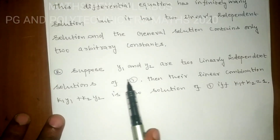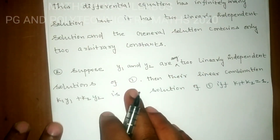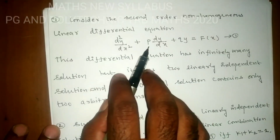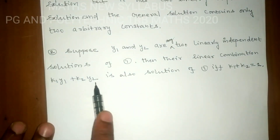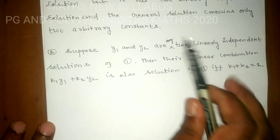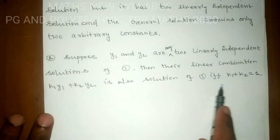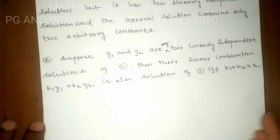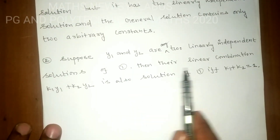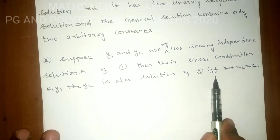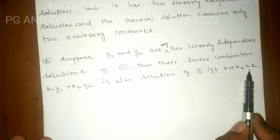Suppose y1 and y2 are any two linearly independent solutions of the differential equation d²y/dx² + p·(dy/dx) + qy = f(x). Then the linear combination k1·y1 + k2·y2 is also a general solution of the differential equation if and only if k1 + k2 = 1. That is, the sum of the arbitrary constants must equal 1.